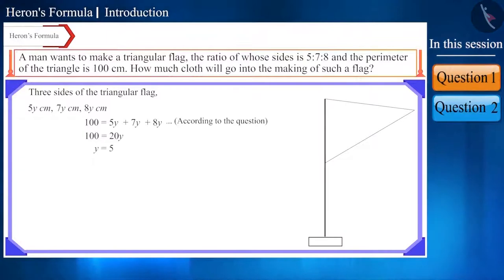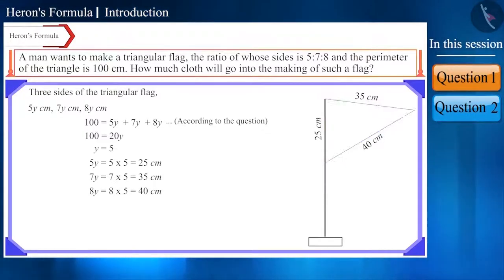Upon finding the value of y, we can find the length of all the sides of the flag. So, 5y is equal to 5 × 5 which is equal to 25 cm, similarly, 7y is equal to 7 × 5 which is equal to 35 cm and 8y is equal to 8 × 5 which is 40 cm. Now we know the length of all the sides of the flag.